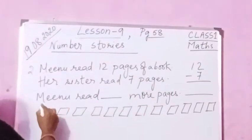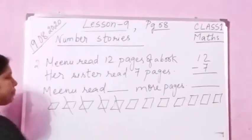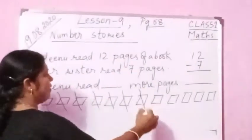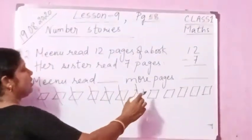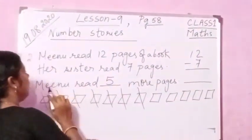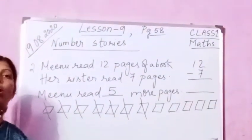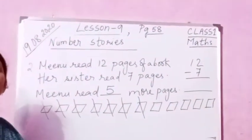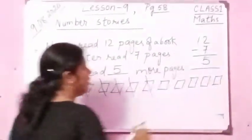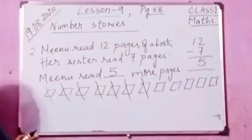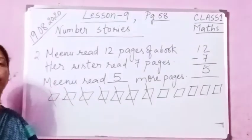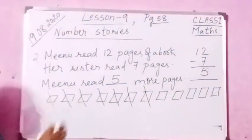So 7 pages you cut — 1, 2, 3, 4, 5, 6, 7. What is remaining? 1, 2, 3, 4, 5. So Minu read 5 more pages. How many pages did Minu read more? 5 pages — she read more. So you just write down 5. Minu read 12 pages of her book, her sister read 7 pages, so Minu read 5 pages more.